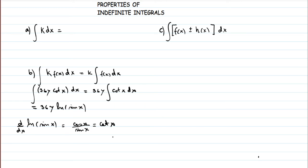This next property looks similar to the constant multiple rule. The difference is that the function being integrated is just 1. So we take the constant k outside and inside we have the integral of 1 dx. The integration of a constant k is k times the integral of dx.